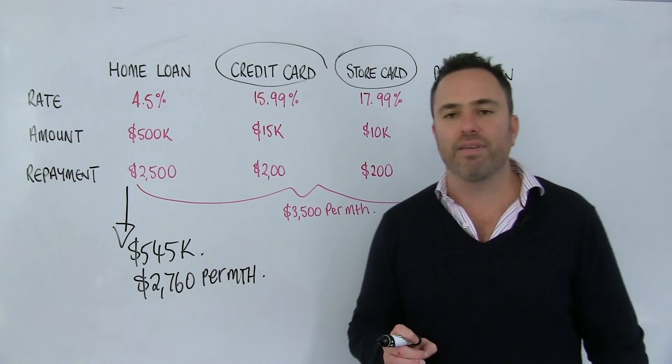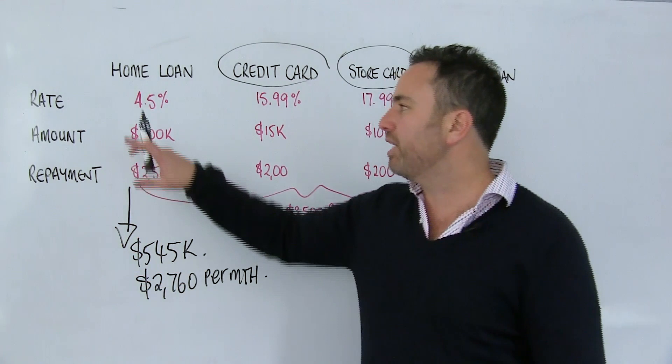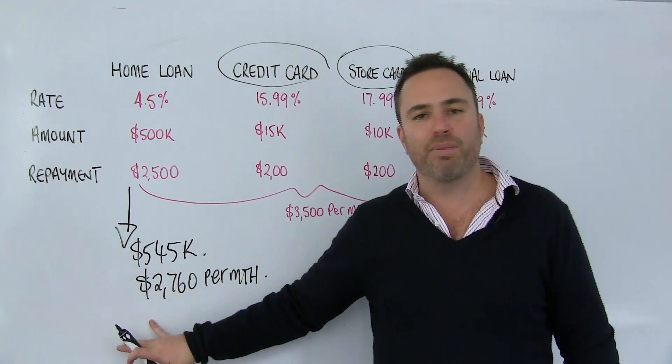But the reality is all we've done is we've consolidated debt, we've put it at a lower rate, but we've taken it out over a much longer term. So the reality is if we were to just turn around and pay the minimum of $2,760 per month, over the journey, we're going to end up paying more interest.